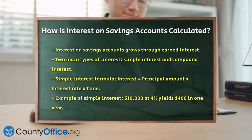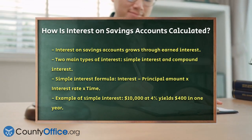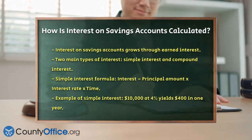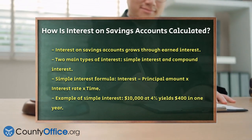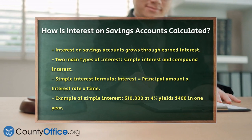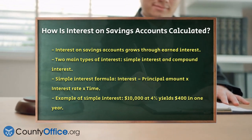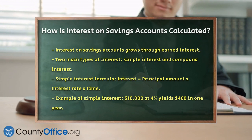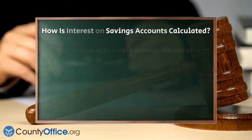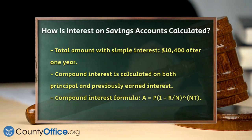For example, if you have $10,000 in your savings account and it earns a 4% interest rate per year, the interest would be $10,000 × 0.04 × 1, which equals $400. This means you'll have $10,400 at the end of the year, but the interest is only calculated on the original $10,000, not on any interest earned along the way.